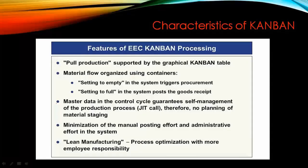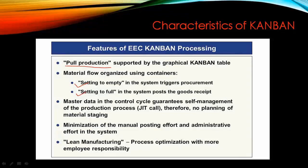Characteristics of Kanban: Kanban uses the pull production method. Material flow is organized using container setting to empty — you can set the container to empty or full in SAP. Master data is controlled in the control cycle, guaranteeing self-management of the production process. JIT — just in time — means there is no planning of material staging. There is minimization of manual posting effort and admin effort in the system. Lean manufacturing and process optimization with more employee responsibility.